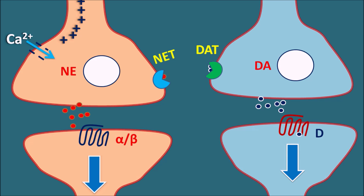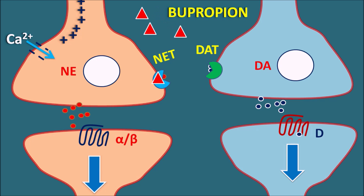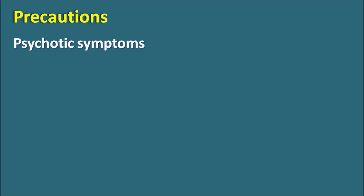The action of mediators like norepinephrine and dopamine is thus controlled by reuptake. Bupropion shows its action by binding to both the norepinephrine transporter (NET) and the dopamine transporter (DAT), inhibiting their activity. This inhibition results in increased levels of both norepinephrine and dopamine within the synaptic cleft, thereby increasing transmission of both neurotransmitters and elevating mood in patients.